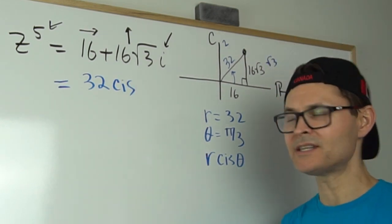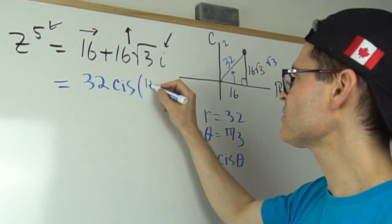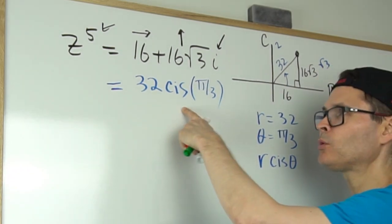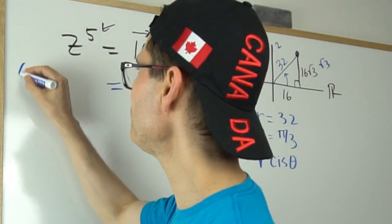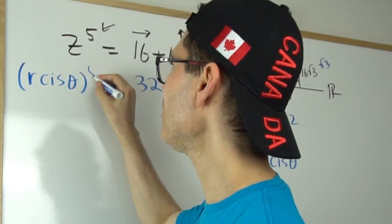So I'm going to write that as 32 cis. We can talk about what that is in a second. Cis of the angle, which is π over 3. So since I've written that in polar form, I have to write the left-hand side in polar form, which is r-cis θ all to the fifth power.